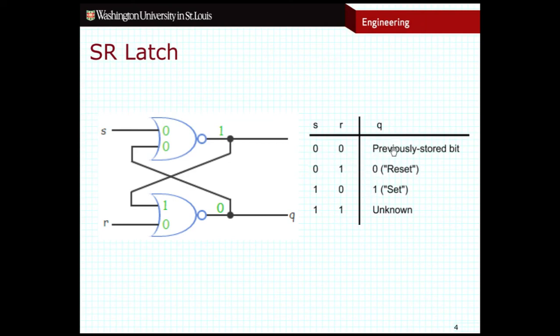So if I was in this configuration previously, it would be 0. If I was in this configuration previously, this will be 1. Now there's one other configuration that's worth talking about. What if they are both high?